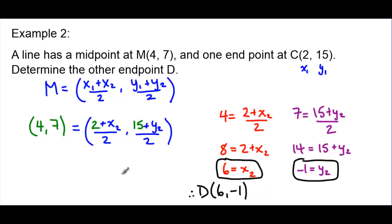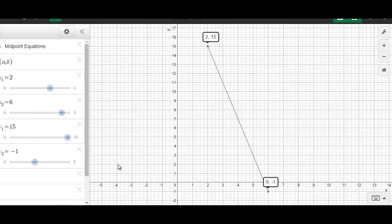Let's just finish off by checking on Desmos to see if we did it correctly. I'm going to put in our two endpoints, (2,15) and (6,-1). And let's see if we end up with our midpoint of (4,7). Here we have those two plotted endpoints, (2,15) and (6,-1). And when I turn on the midpoint, (4,7) happens to be the correct answer. So that means that we've done it correctly.